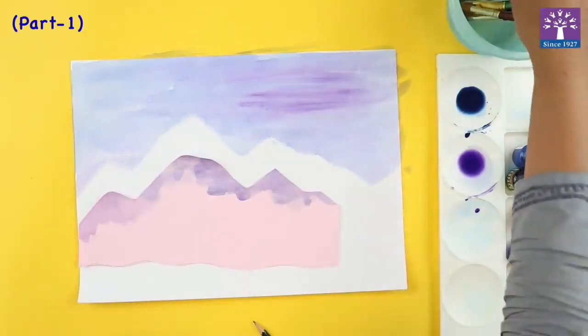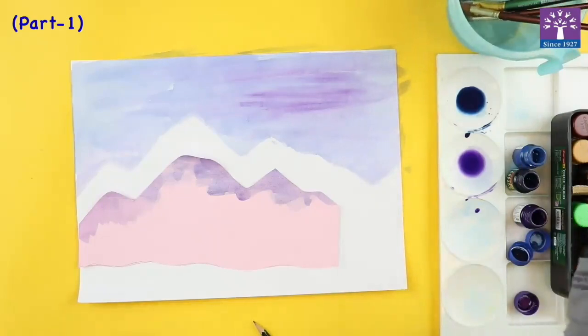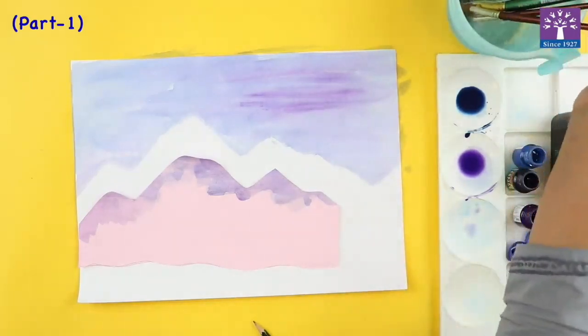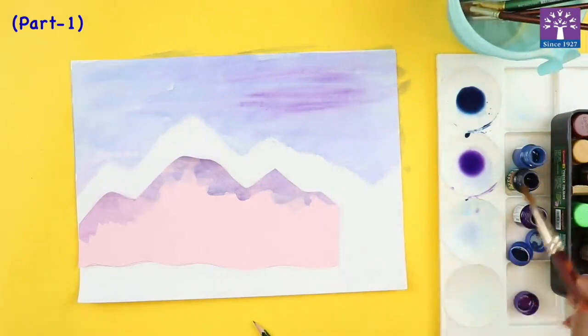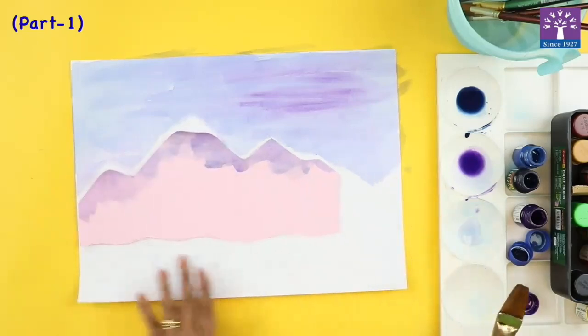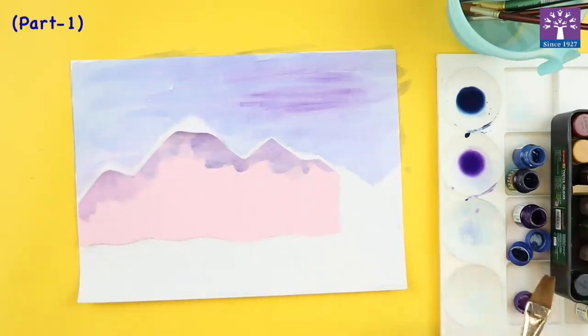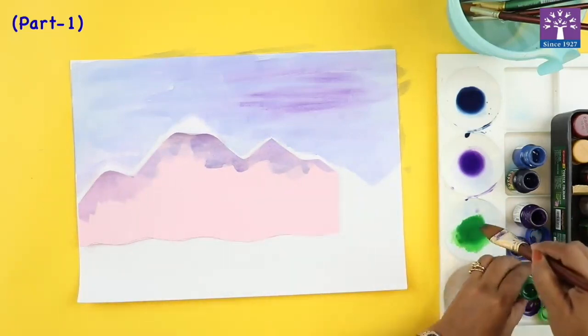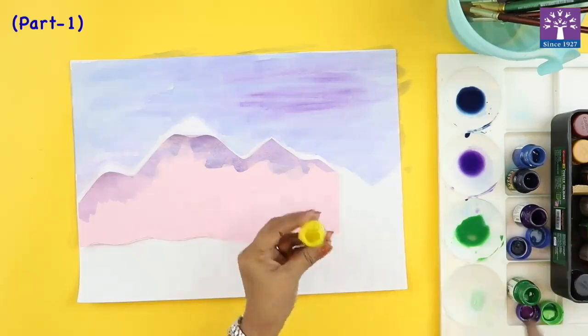Thoroughly wash your brush. I'm taking water again in a fresh part. Now we are going to paint the ground. I'm going to take a green color paint, dilute it with water, taking my yellow paint and mixing it.